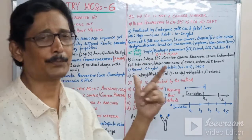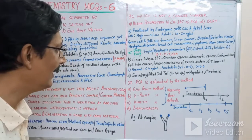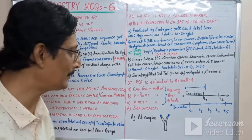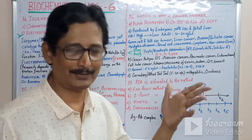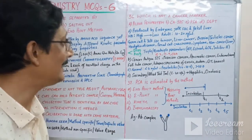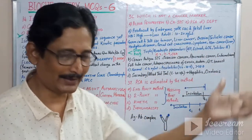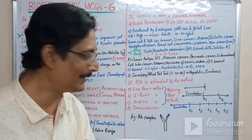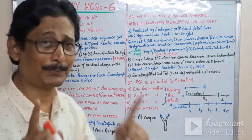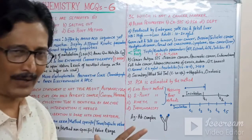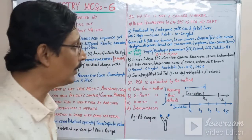PSA (prostate-specific antigen) has a normal value of less than 4 ng/mL. Values of 4–10 ng/mL indicate prostatitis (inflammation), while values above 10 ng/mL suggest prostate cancer. PSA is a cancer marker. Option D, SGPT, is an enzyme used as a secondary or allied test tool with a normal value of 5–40 units per liter, and it is mainly a marker of hepatitis and cirrhosis — not a cancer marker.